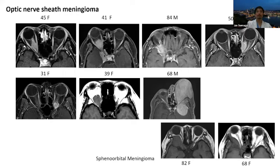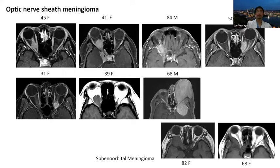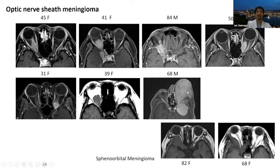On the other hand, this is an optic nerve sheath meningioma. Compared to angioma, the enhancement pattern is very different — it is homogeneously enhanced and the optic nerve runs through the tumor. This 68-year-old man has a very large case with intraorbital to intracranial extension, so his left visual function is already lost.